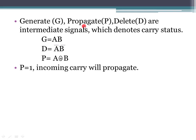Now we need to know three signals: generate, propagate, and delete. The generate signal g is equal to A AND B. The delete signal d is equal to A-bar AND B-bar. The propagate signal p is equal to A XOR B.